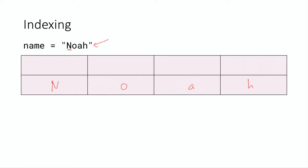That may sound kind of weird because we're all used to counting from one instead of from zero, but it makes sense in programming and eventually you'll see why. We can assign each character its position: N is zero, then we just count up — zero, one, two, three, and so on. These are the indices. If I asked you what's the zeroeth character of the string, you'd say it's N. If I asked for the second, you'd say A. If I asked for the tenth character, obviously there isn't one, and the program would give an error message.